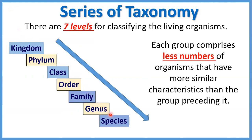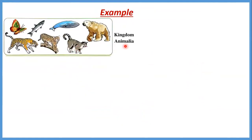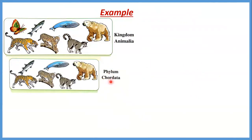Each group comprises a less number of organisms that have more similar characteristics than the group preceding it. لو بصينا على kingdom Animalia — دي اللي بتضم كل الanimals — including all the animals, ما فيش أي classification فيهم. لو جينا جوا kingdom Animalia وشوفنا phylum منها زي phylum Chordata — دي living organisms اللي عندها vertebral column — هنلاقي إن العدد بتاعهم قل لأن إحنا عملنا more specification.